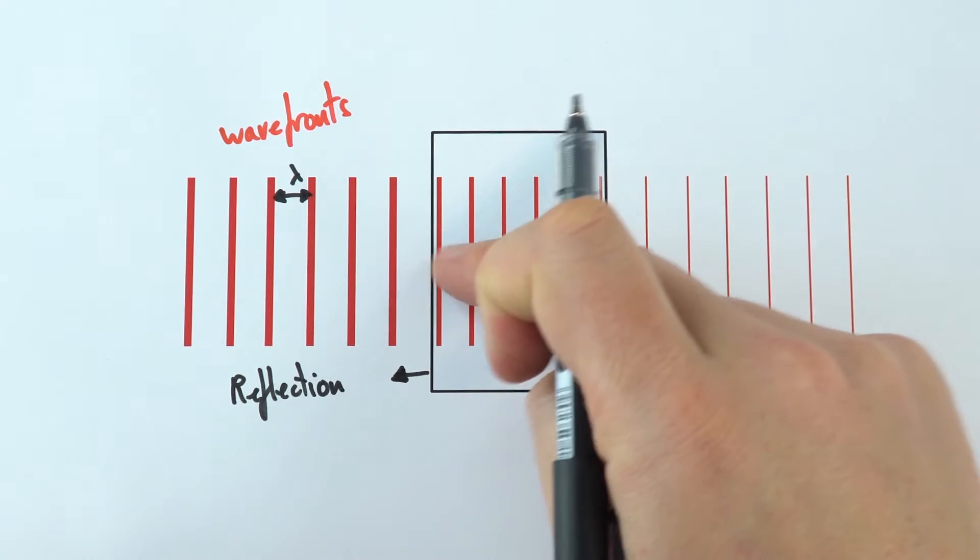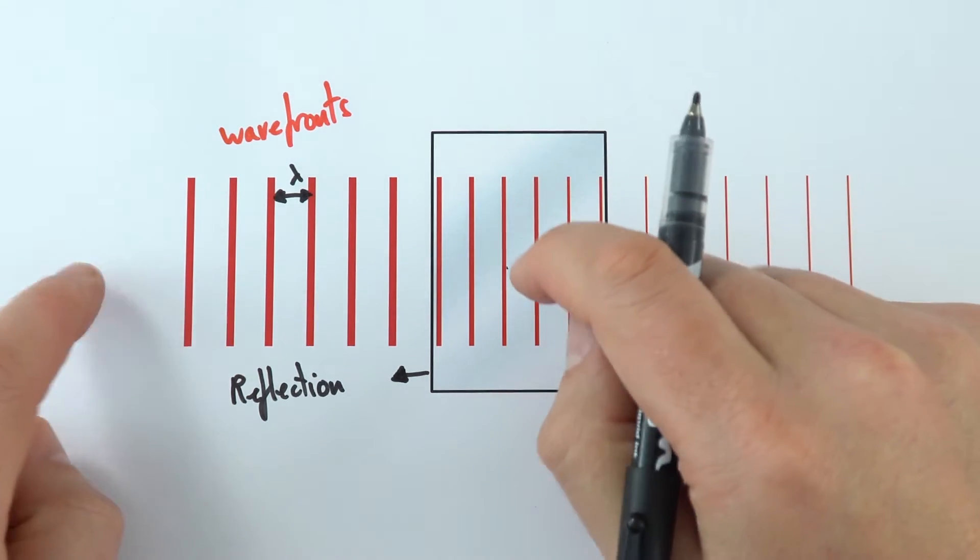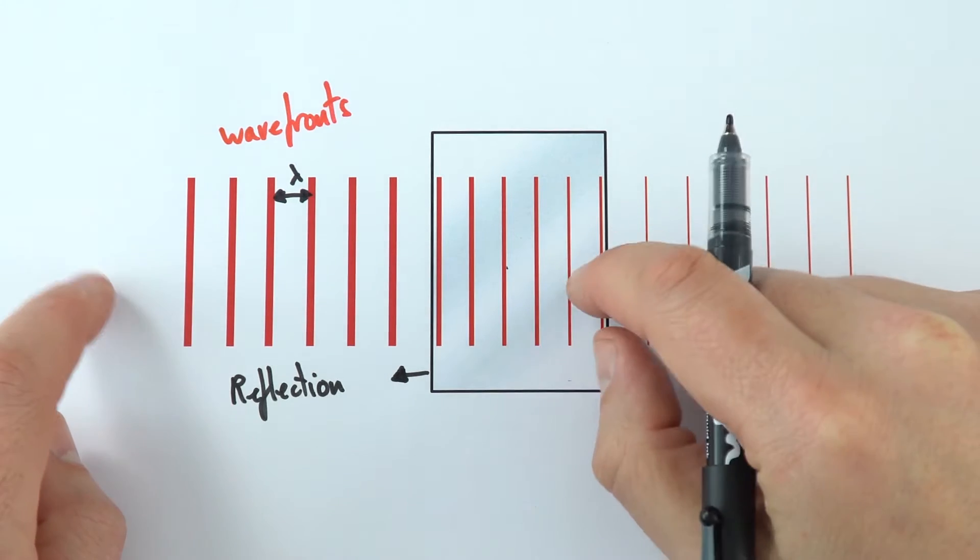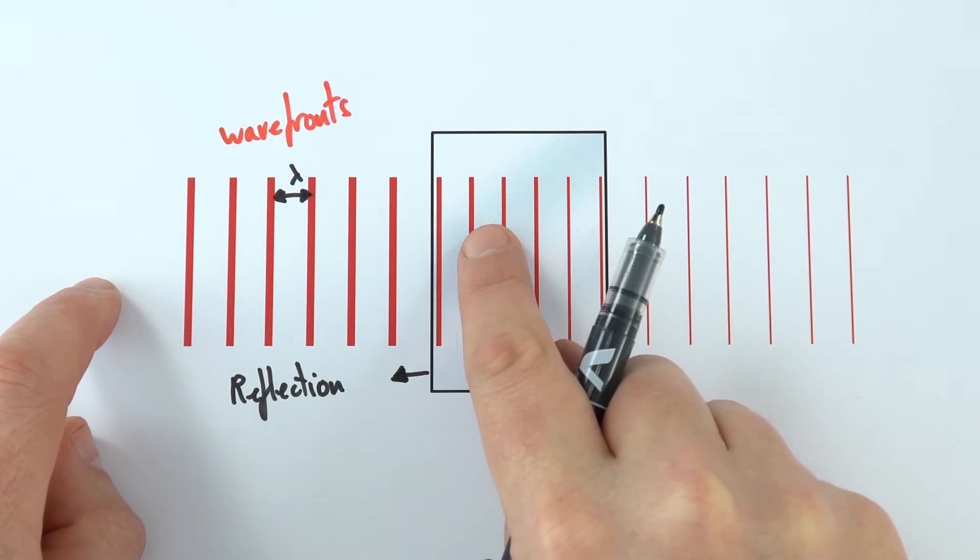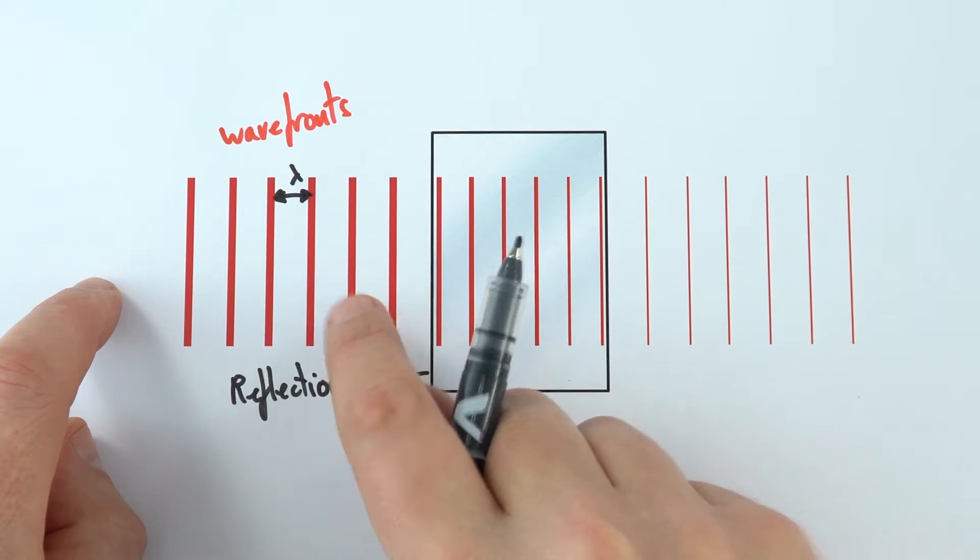But in this case some of that wave is also travelling through this other material. And as it does that, in this case it might be a light wave which goes from the air into the glass, it might slow down. And as it slows down, the wavelength actually decreases. So we can see that the distance between the wave fronts here is smaller than the distance between the wave fronts over here.